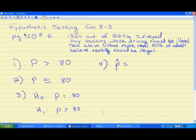Somebody says that they believe that more than 80% of all adults, that's what they really mean, that 80% of all adults believe texting should be legal. But all we have to go on is our study. And in this study, in the problem, 2,246 people were surveyed. And out of those, 1,864 thought texting should be legal. So our point estimate of the percentage of adults who believe texting should be legal is 1,864 divided by 2,246.